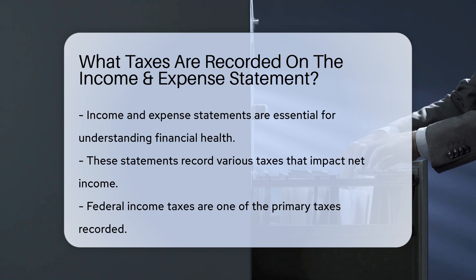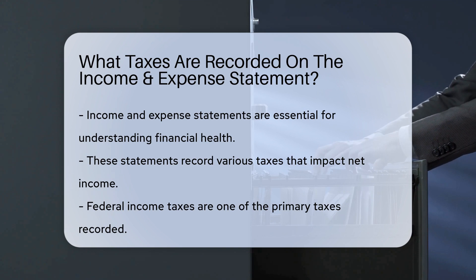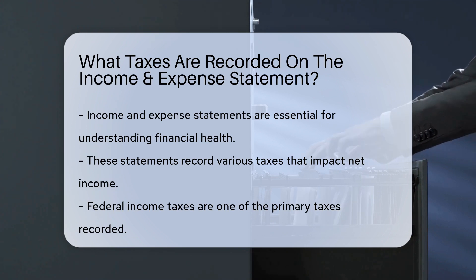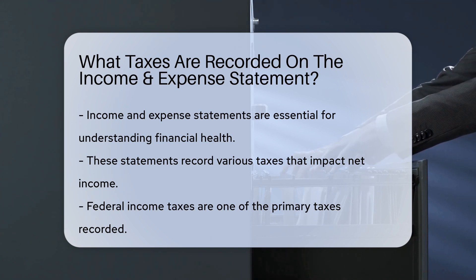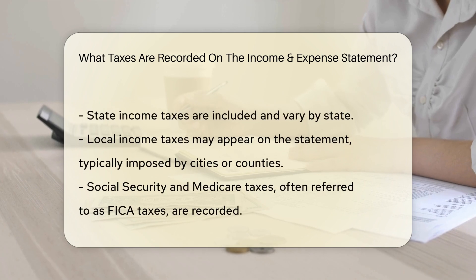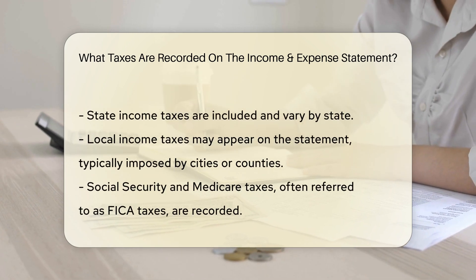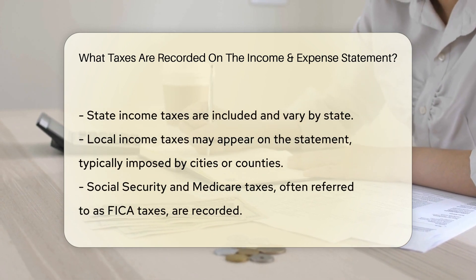Federal income taxes are one of the primary taxes recorded. These taxes are based on earnings and are paid to the federal government. State income taxes are also included, varying by state — some states have higher rates while others have none.